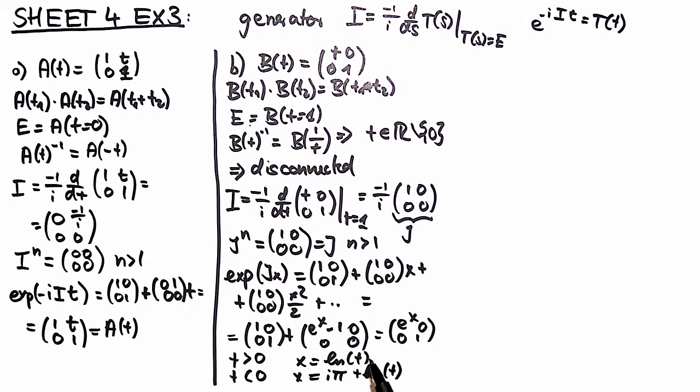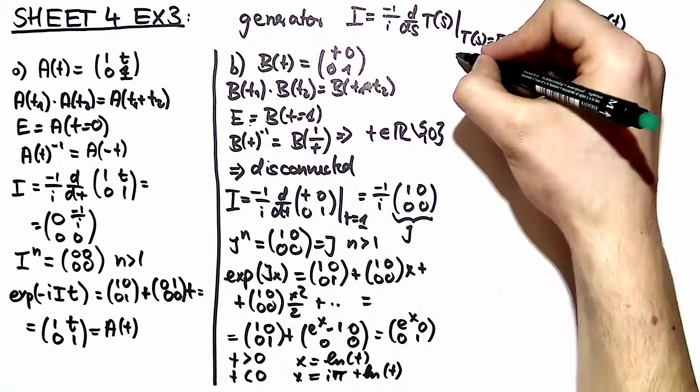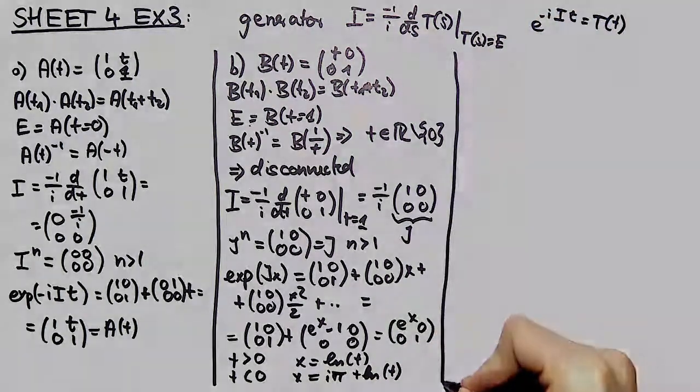Here you can see again the parameter space lies therefore in the complex plane and these are two lines which are separated by e to the i pi and they can't be connected so it's a disconnected group. Thank you.